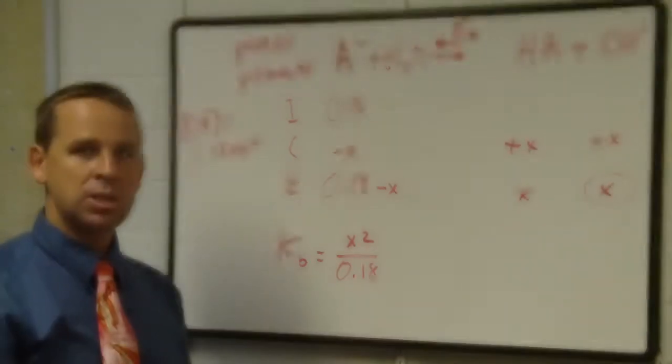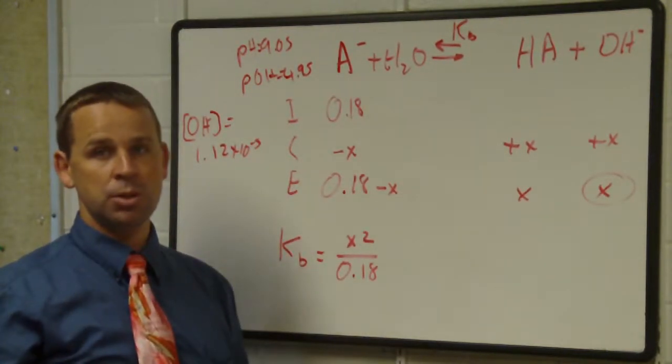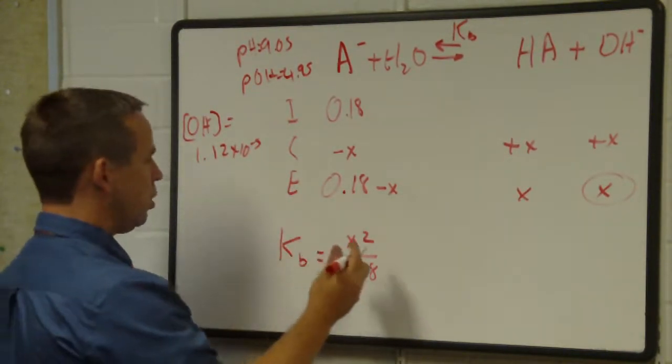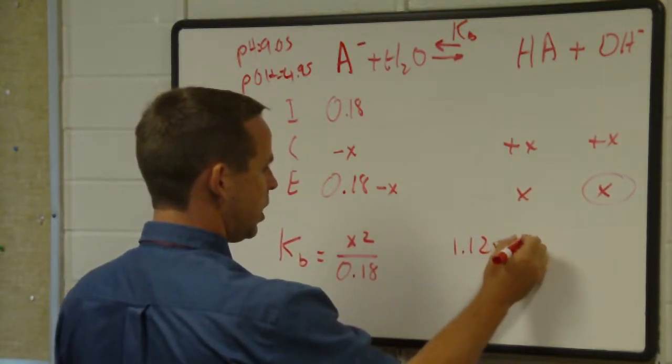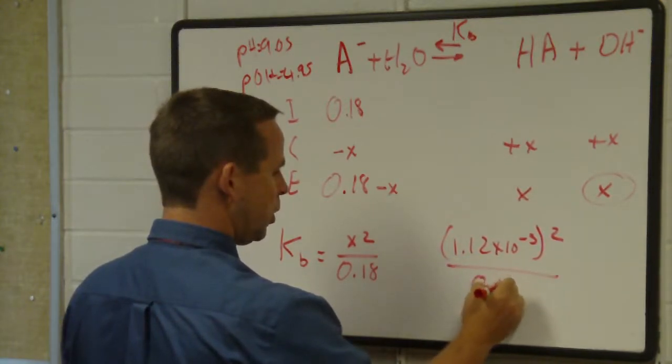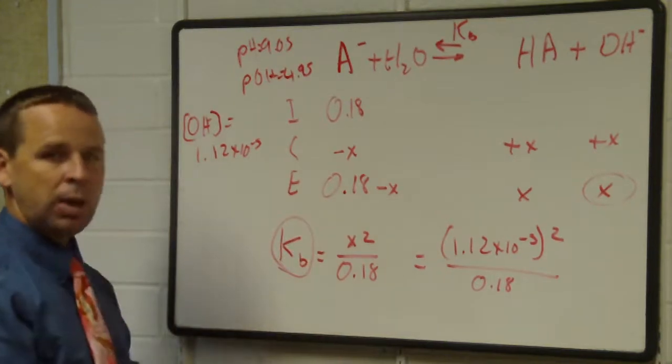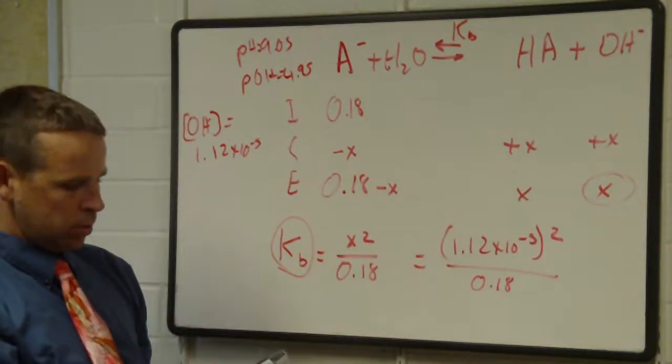That means OH ion concentration I can find by taking 10 and raising it to the negative 4.95. So the OH ion concentration equals 1.12 times 10 to the minus 5. So that X there should be equal to 1.12 times 10 to the minus 5 if it really is pH of 9.05. If I take 1.12 times 10 to the minus 5, that's my X, I have to square it and divide it by 0.18.